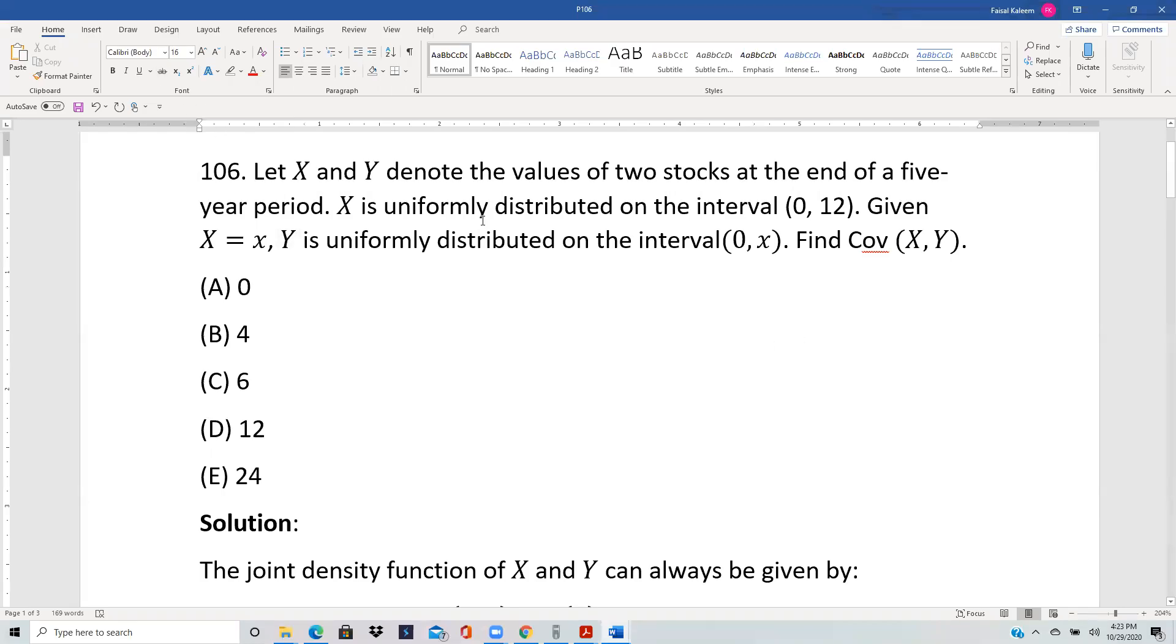Let X and Y denote values of two stocks at the end of a five-year period. X is uniform on [0,12]. Given X equals x, Y is uniform on [0,x]. Find covariance of X, Y. The first step here should be to find the joint PDF.